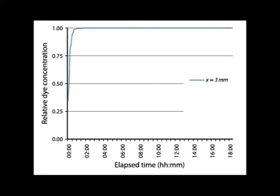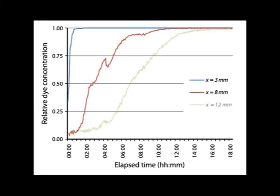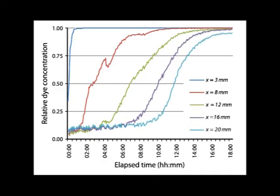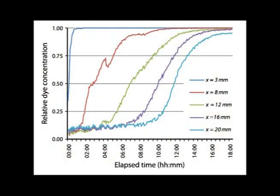Diffusion can move solutes very quickly over small distances, but it is very slow over long distances. You can see this in this 18-hour time-lapse video of the spread of dye under the coverslip. We can measure the rate of dye spread by looking at the rise of concentration at various points: at 3 mm, 8 mm, 12 mm, 16 mm, and 20 mm from the edge. These coverslips are 22 mm across. The dye shows up within a few minutes at 3 mm from the edge, but it takes hours for the dye to move even a couple of centimeters across the slide.